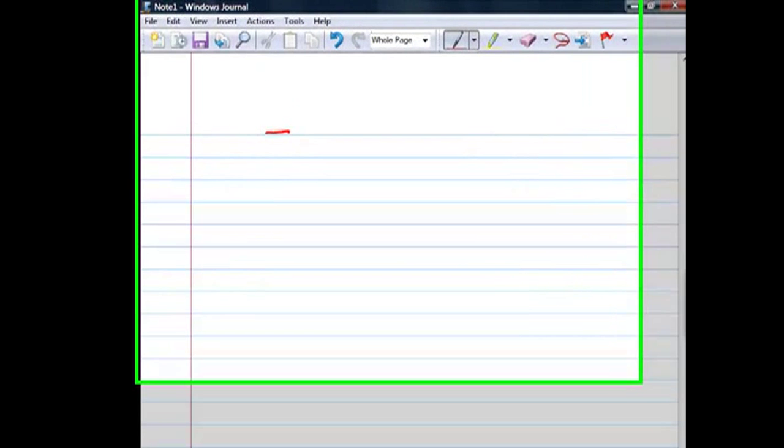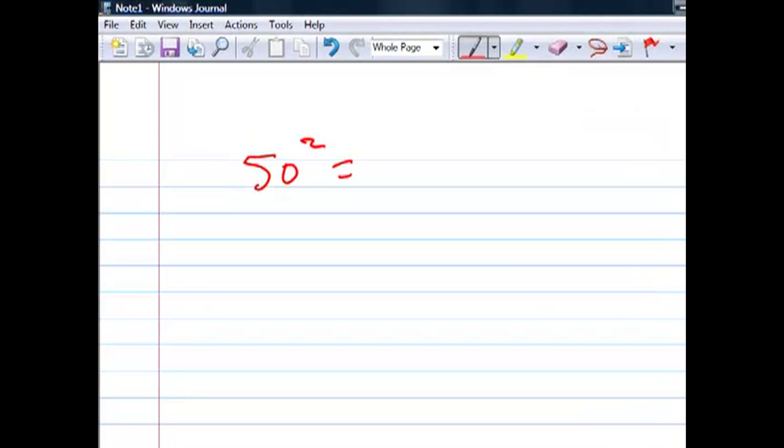Hi guys, today I will tell you an easy way to do a square of any two-digit number near 50. Let's start first with the 50. 50 square is 2500. If I have to do a square of 49, all I have to do is subtract 1 from 25, that will be 24, and add a square of 1, that is 2401.